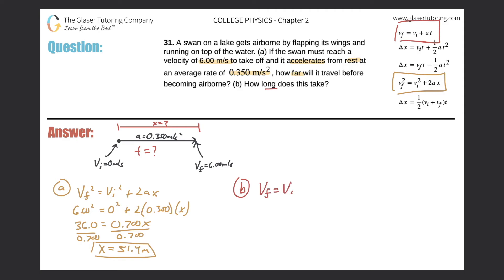So the final velocity is equal to the initial velocity plus the acceleration times time. The final velocity was six meters per second. The initial velocity was zero. The acceleration was 0.350. And now we're looking for t. So just simplifying this, it's 0.350t. Divide out now the 0.350 from both sides.